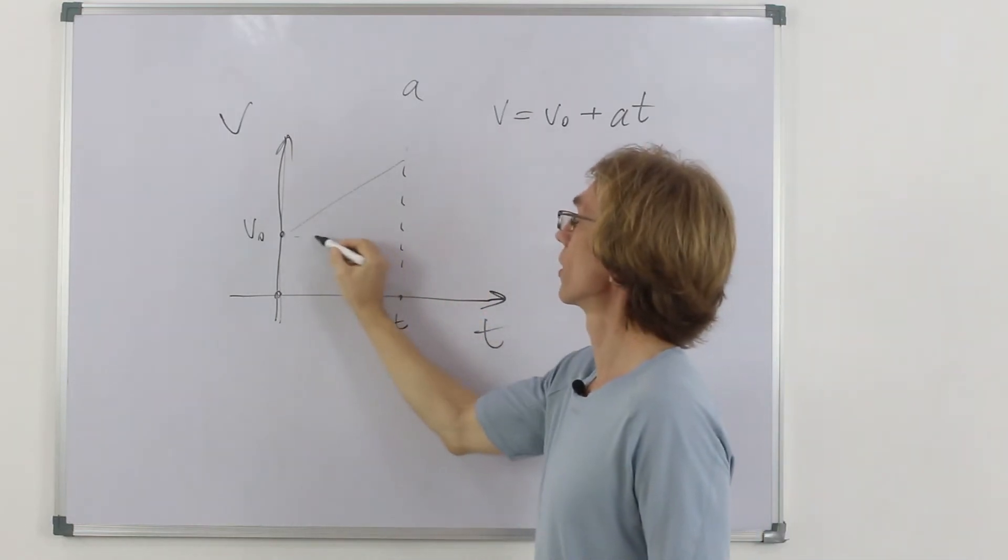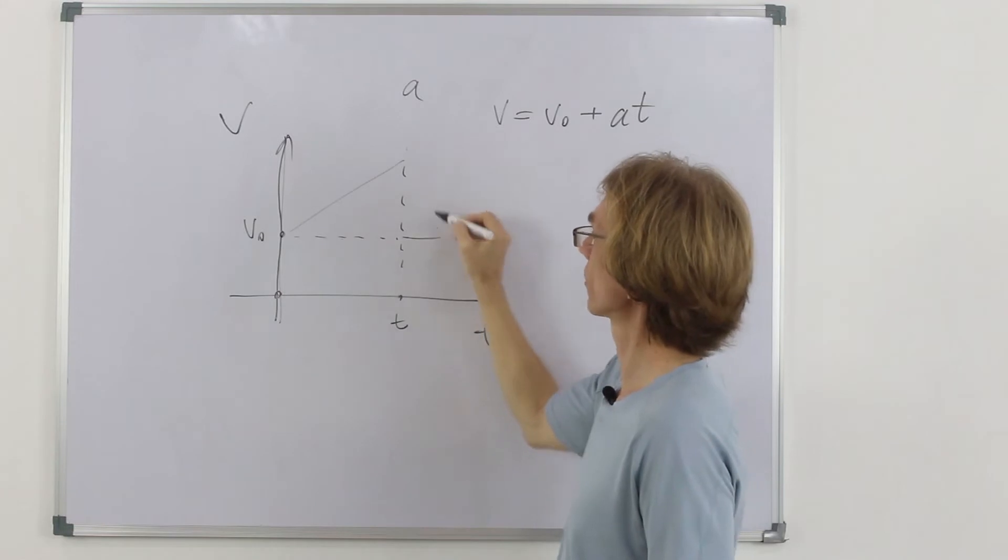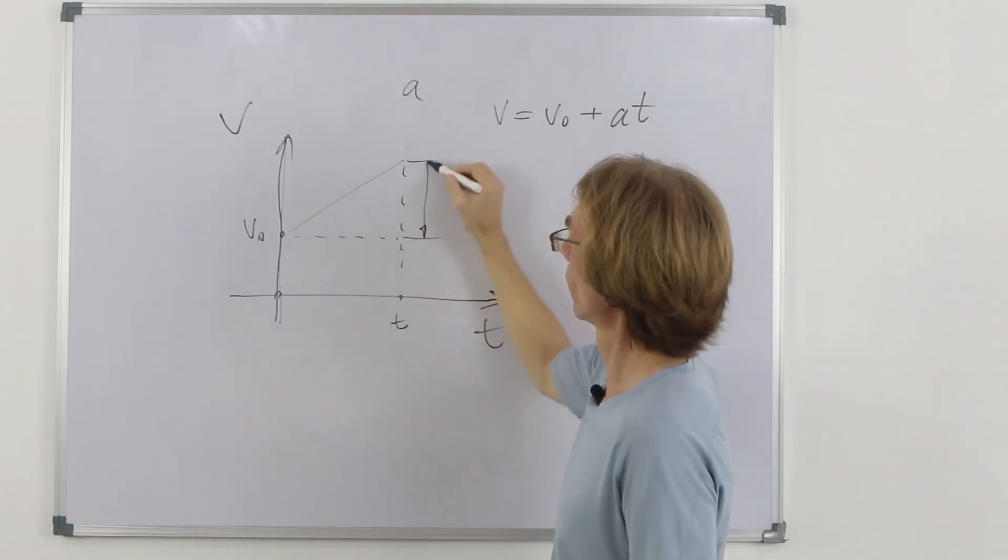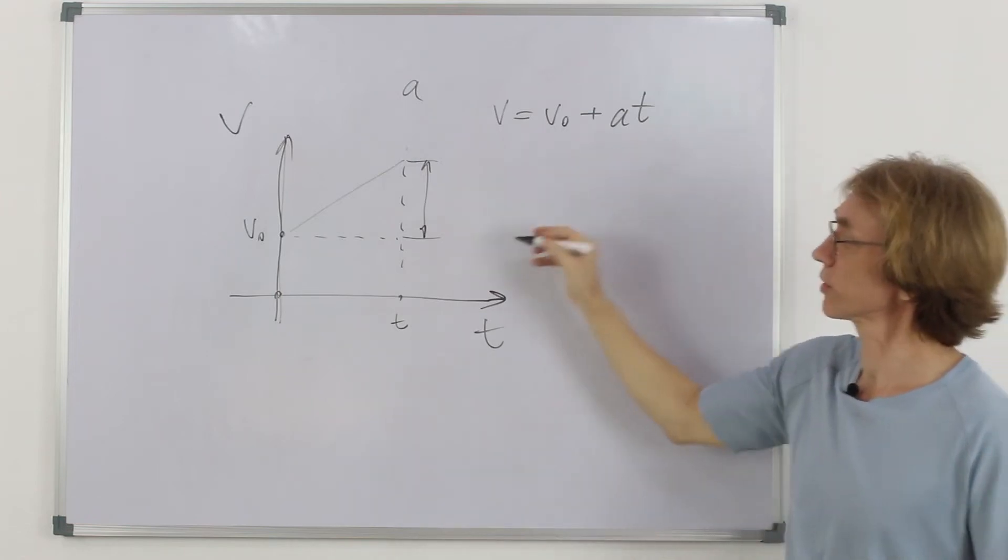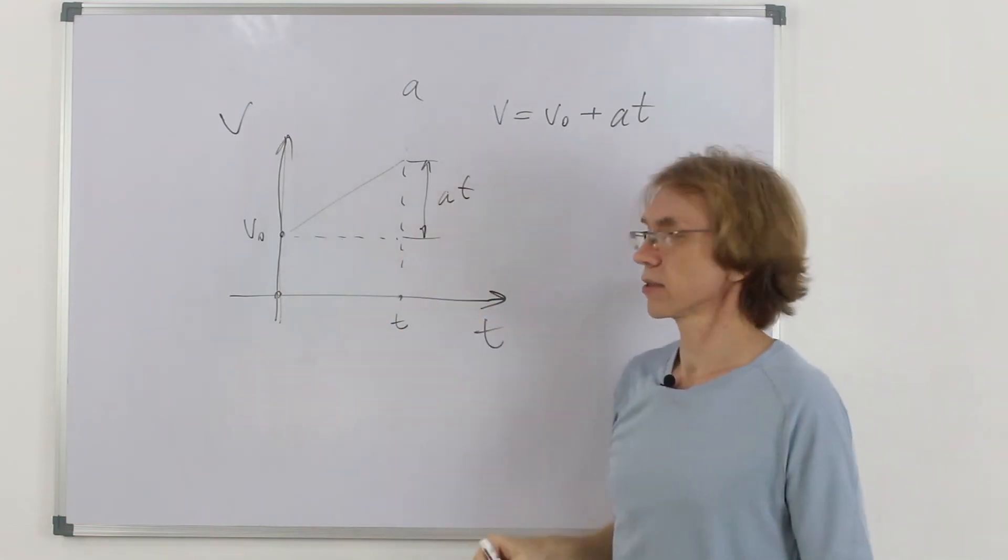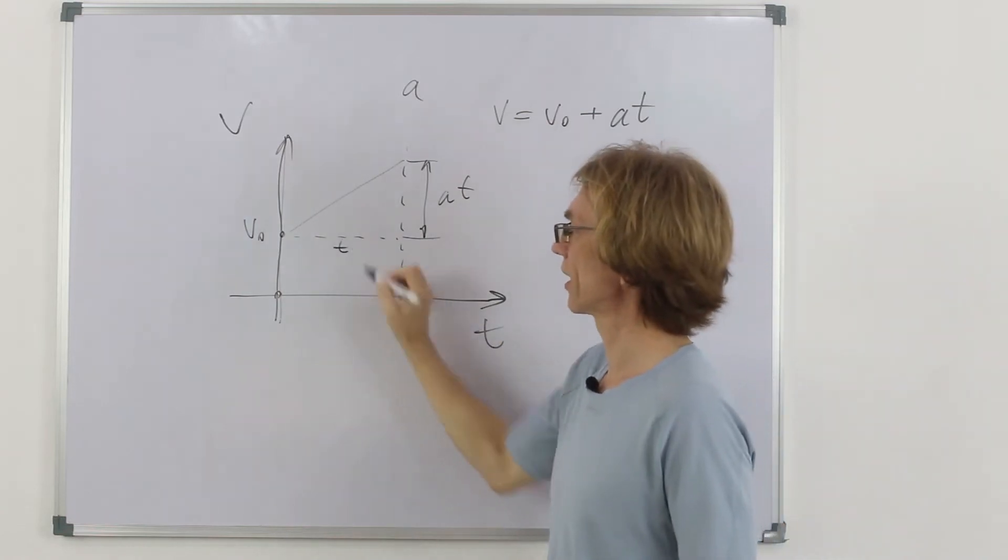How much is this height? This is a change of velocity. What is the change of velocity? At. What is this length of this side? That's our time.